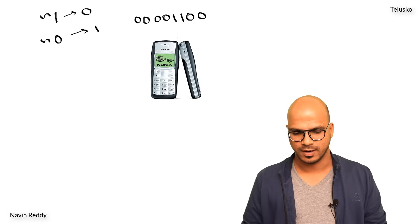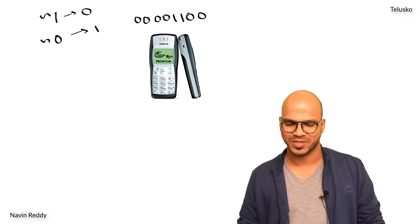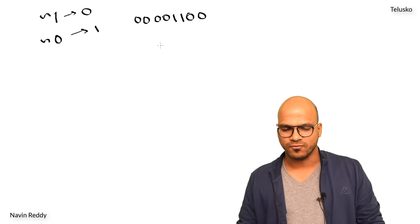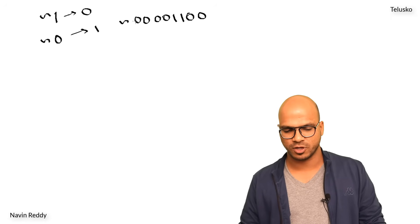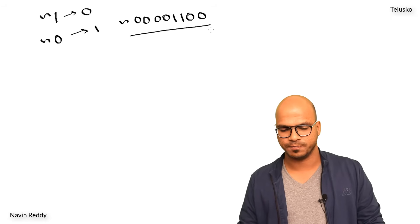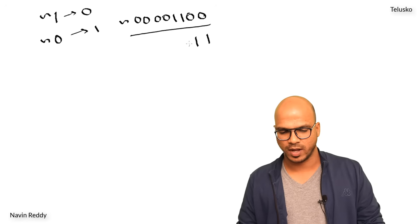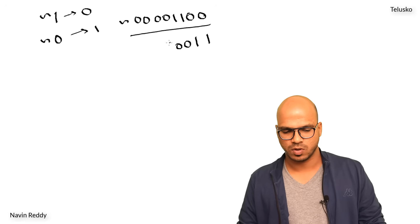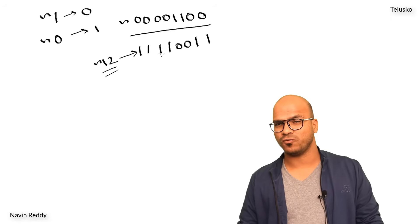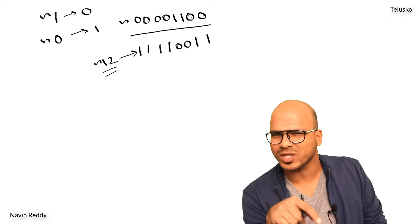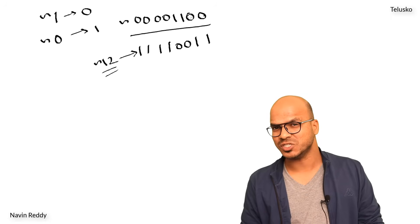That's your 12 in binary format — like a Nokia 1100, everyone loves it! Now we need to find the complement of it, so we reverse each bit. The 0 becomes 1, then we get 1, 0, 0, 1, 1, 1, 1, 1. So this is the complement of 12. But what is this number, and why did we get minus 13? That's weird.